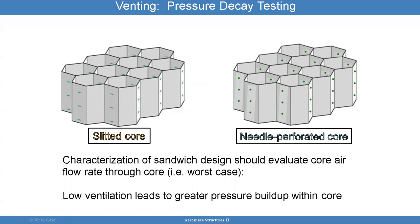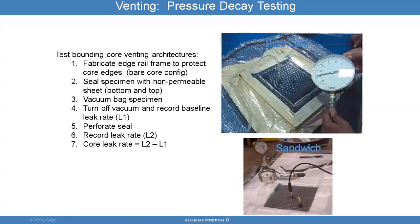Here's an example of what pressure decay testing is. You fabricate an edge rail frame to protect the core edges, seal the specimen, apply vacuum to the specimen, and then turn off the vacuum and record the leak rate.